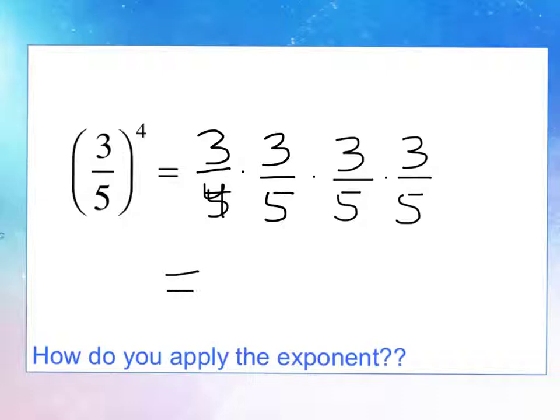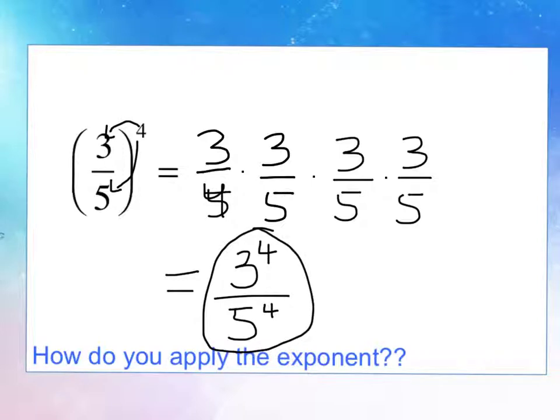So in total we have 4 3's up top and 5 4's in the bottom. So instead of having to write it all out and then count how many we have, we could just distribute the 4 to the 3 and to the 5. So instead of writing it all out, we do that, and here is our simplified expression. And of course if they had the same base, we could simplify it more.